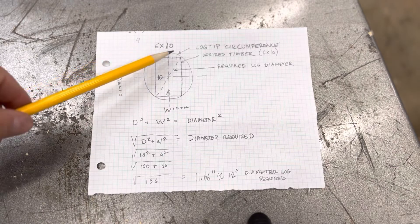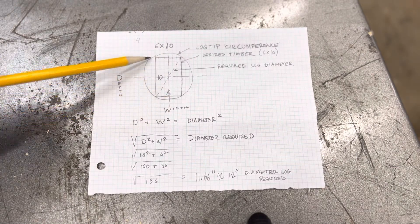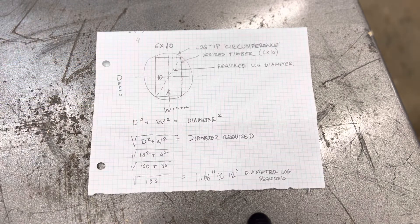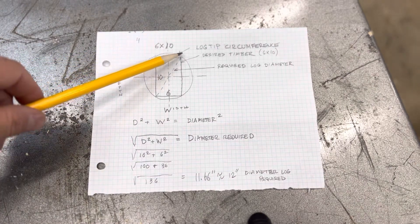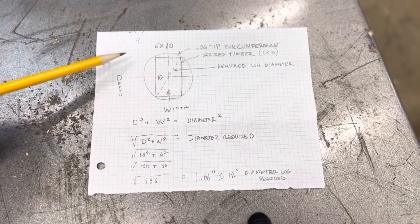Our desired timber in this case is a 6 by 10. So we've got 6 inches down here on the width, we've got 10 inches here on the depth. So you'll notice I've drawn the timber inside the log in a perfect scenario.